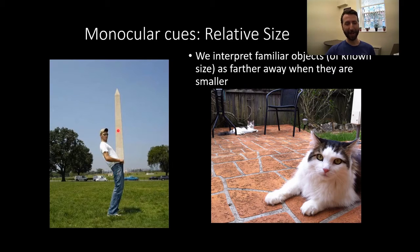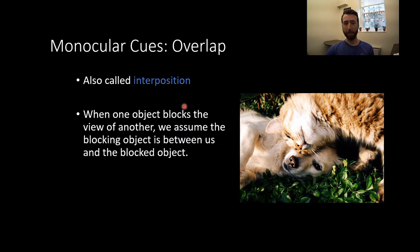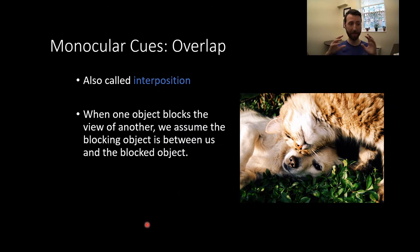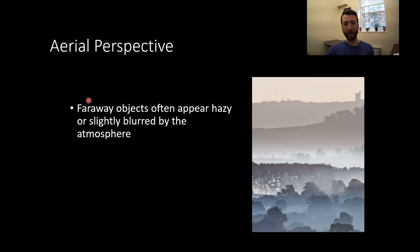Likewise, we know the Washington Monument isn't part of the person in the photo — we know how big the Washington Monument is and how big a person is, so we can infer it's far away. The concept of overlap or interposition means that when one object blocks the view of another, we assume the blocking object is between us and the blocked object. Here we have a cat and a dog cuddling — the cat is closer to us because it's occluding part of the dog. We don't assume it's some weird cat-dog hybrid; we can tell the cat is in front because it's blocking our view.